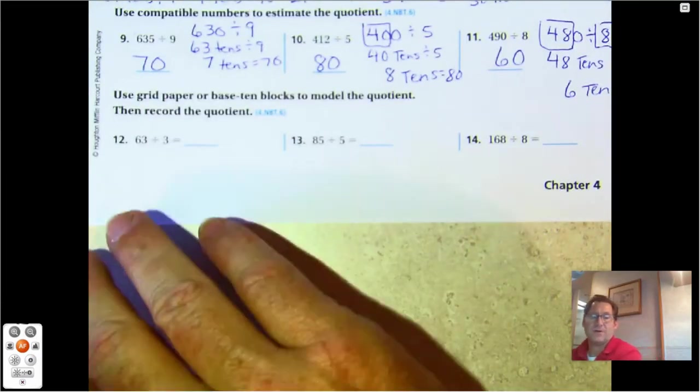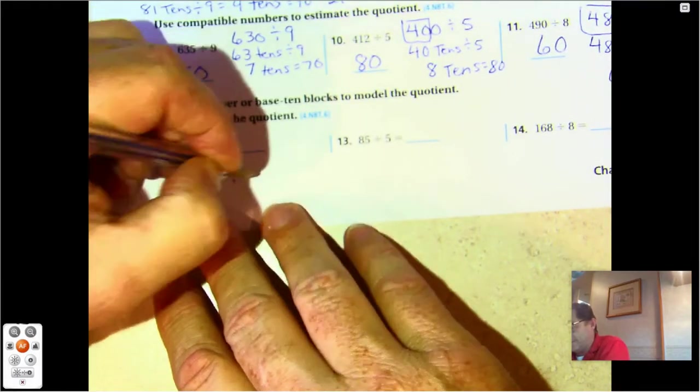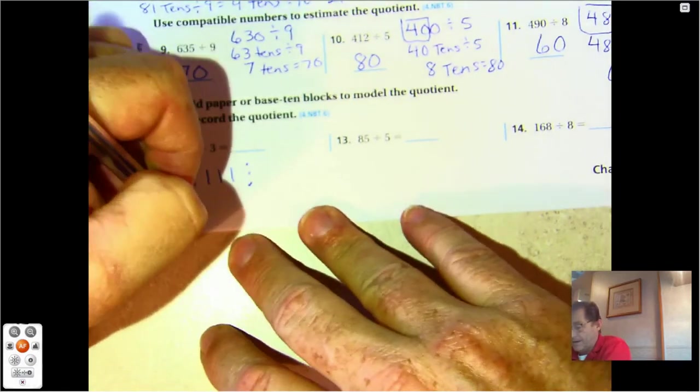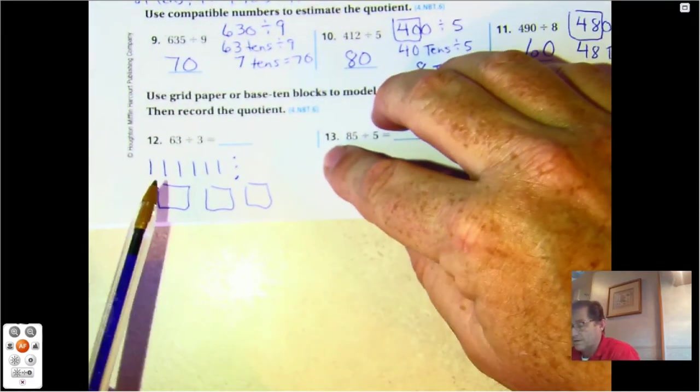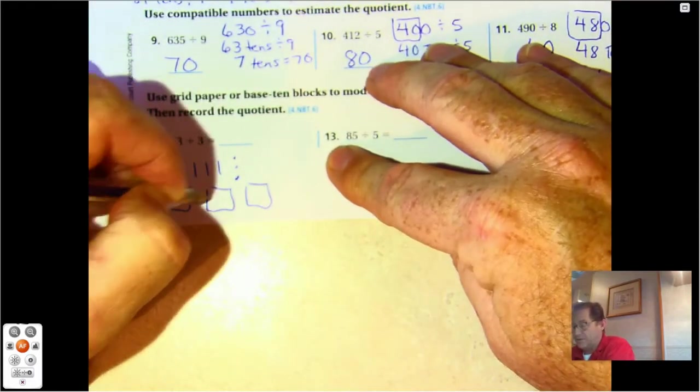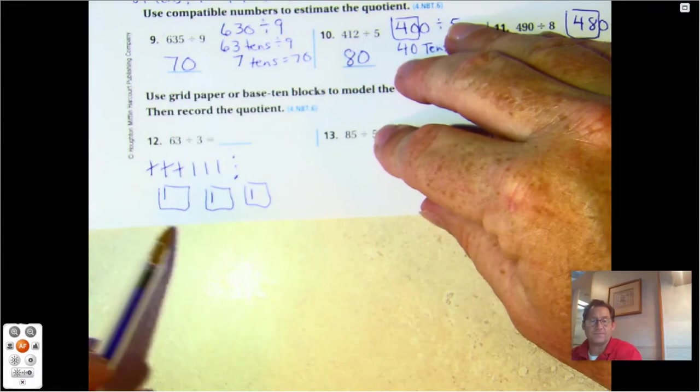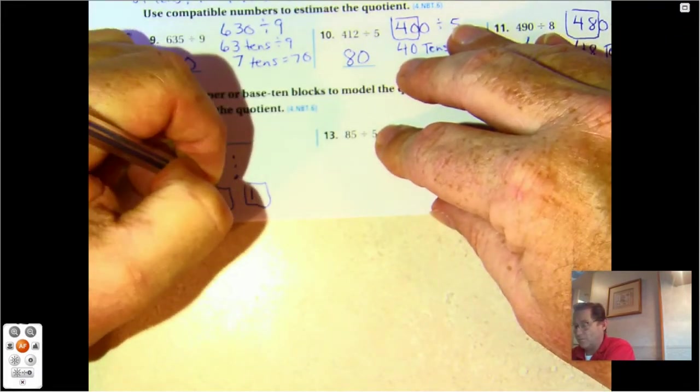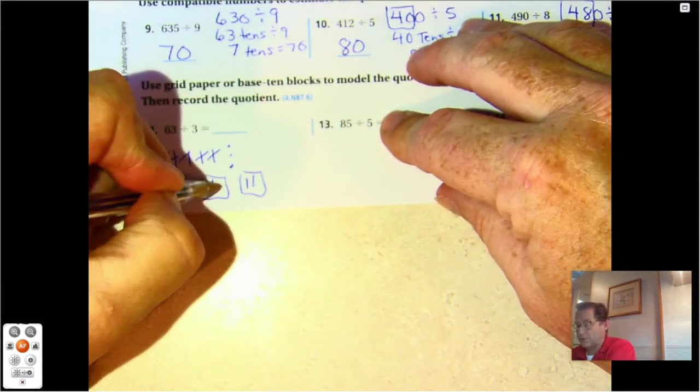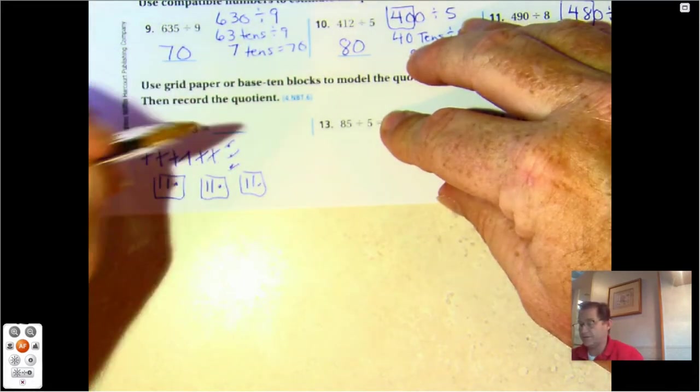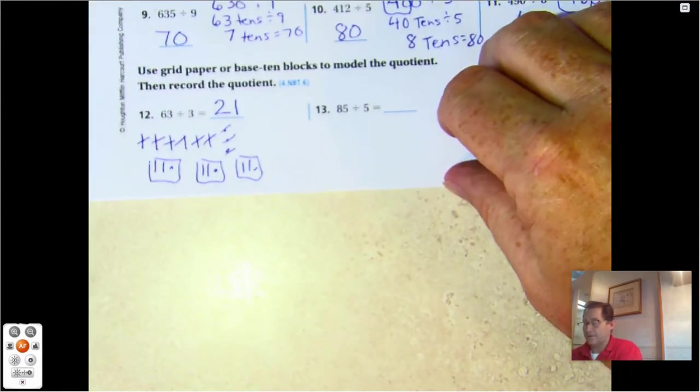Use base 10 blocks to model the quotient. 63: ten, twenty, thirty, forty, fifty, sixty; one, two, three. And we have three groups. I have six tens I need to share. We can start by just sharing three, and I'll cross those three out because I shared them. But I have three remaining, so I can still put one more in each group evenly. And now I have no tens left, but I have three ones. Let's just drop one one into each group. And we've shared those. We have nothing left. So we have 21: two tens and a one.